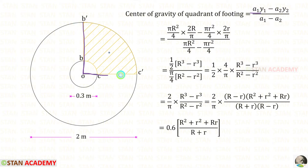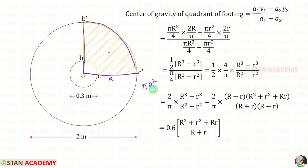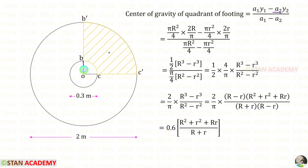A1 is the area of the footing quadrant with radius R. The area formula for a full circle is pi R squared, so the quadrant area A1 is pi R squared upon 4. A2 is the quadrant area of the column with radius r, with area formula pi r squared upon 4.